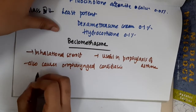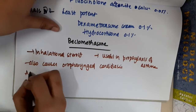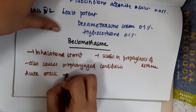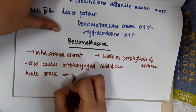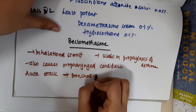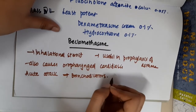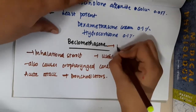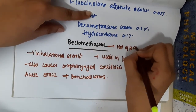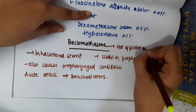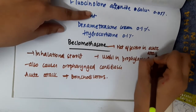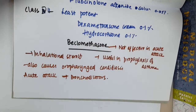In the acute attack of asthma, we use bronchodilators. Beclomethasone is not effective in the acute attack of asthma.